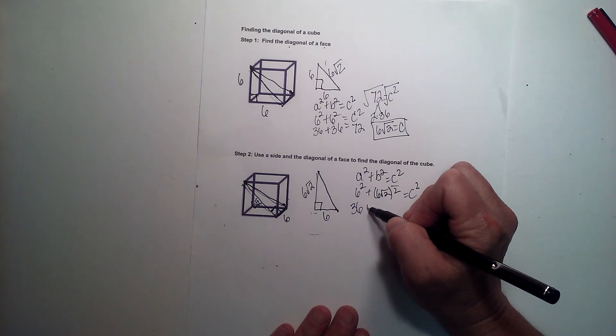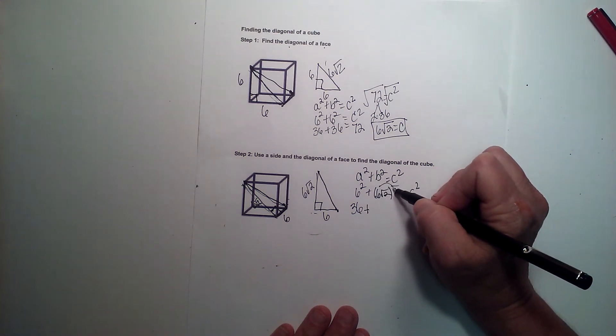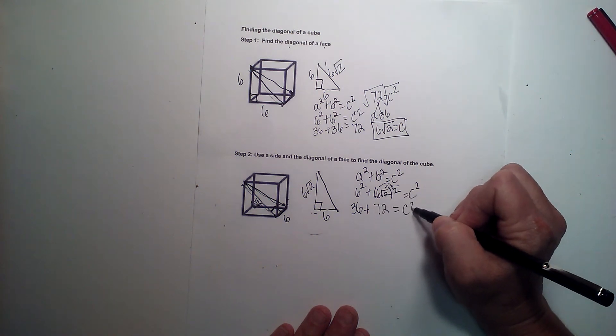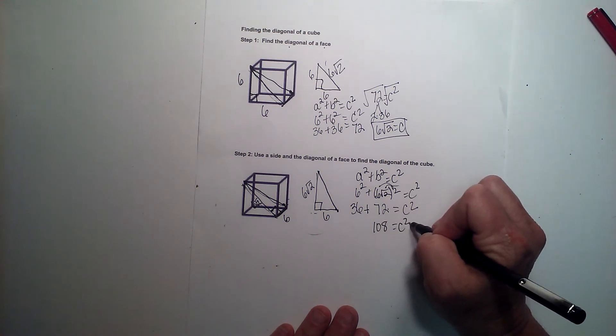So that's going to give me 36 plus, well, 6 root 2 squared is 36 times 2, which is 72. And that's equal to c squared. And when we add this together, we get 108 is equal to c squared.